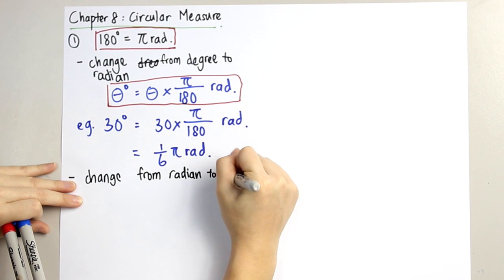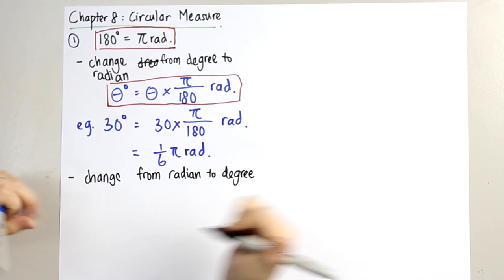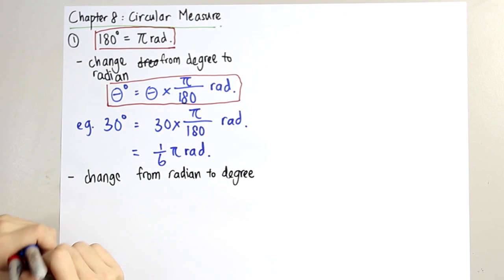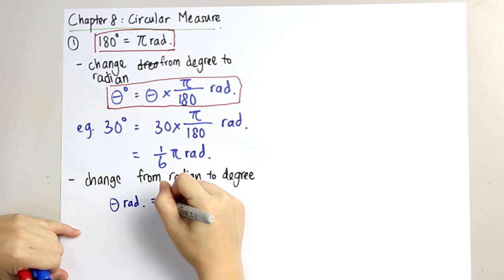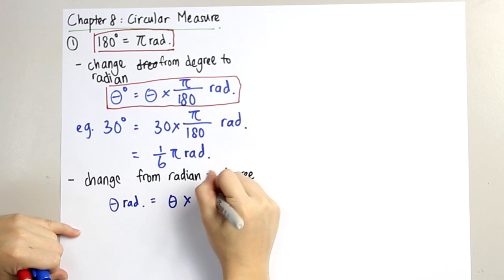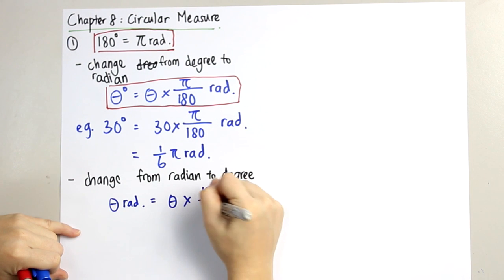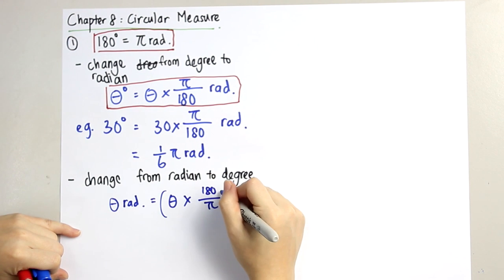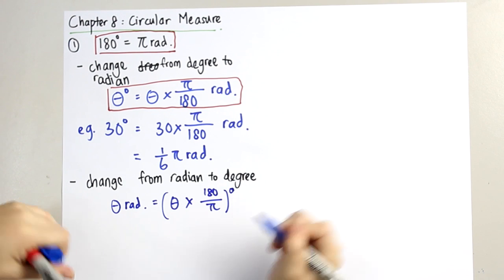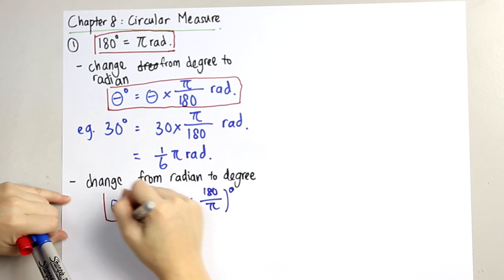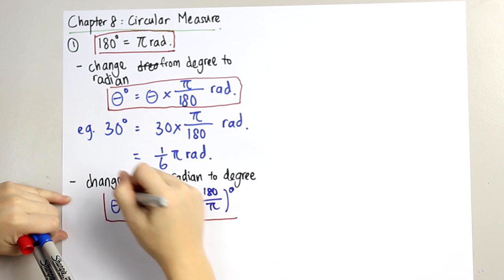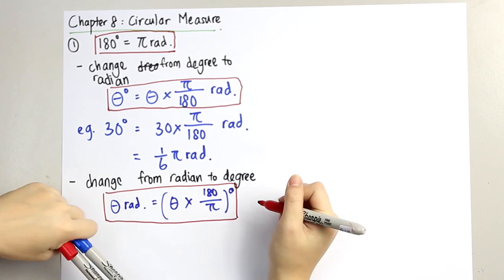Next, we do changing from radian to degree. The formula to change from radian to degree is: let's say we are given theta radian — we take theta times 180 over pi. It is the exact opposite of the formula for changing from degree to radian. Once you remember this formula, we can try some examples.